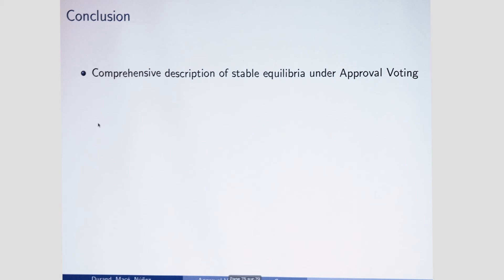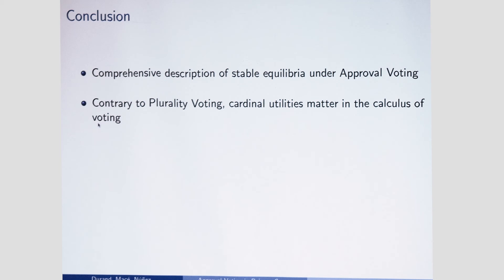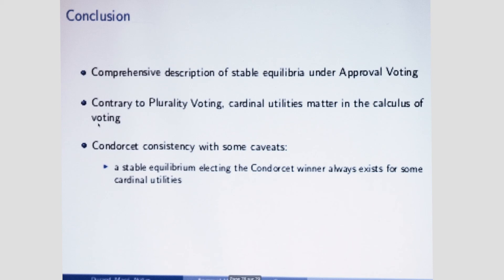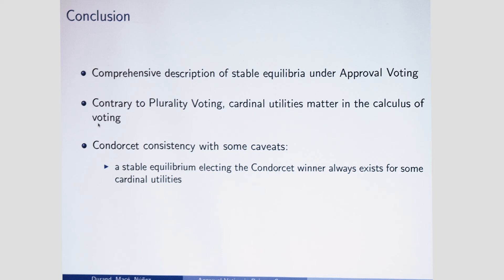To summarize: we have a comprehensive description of the equilibria. Contrary to plurality voting, things are more complicated because cardinal utilities matter. Finally, we have some Condorcet consistency of the rule, but with caveats: a stable equilibrium where the Condorcet winner is elected exists only for some cardinal utilities, and there are sometimes stable equilibria that do not elect the Condorcet winner, but these equilibria are quite unlikely. Thank you for your attention.